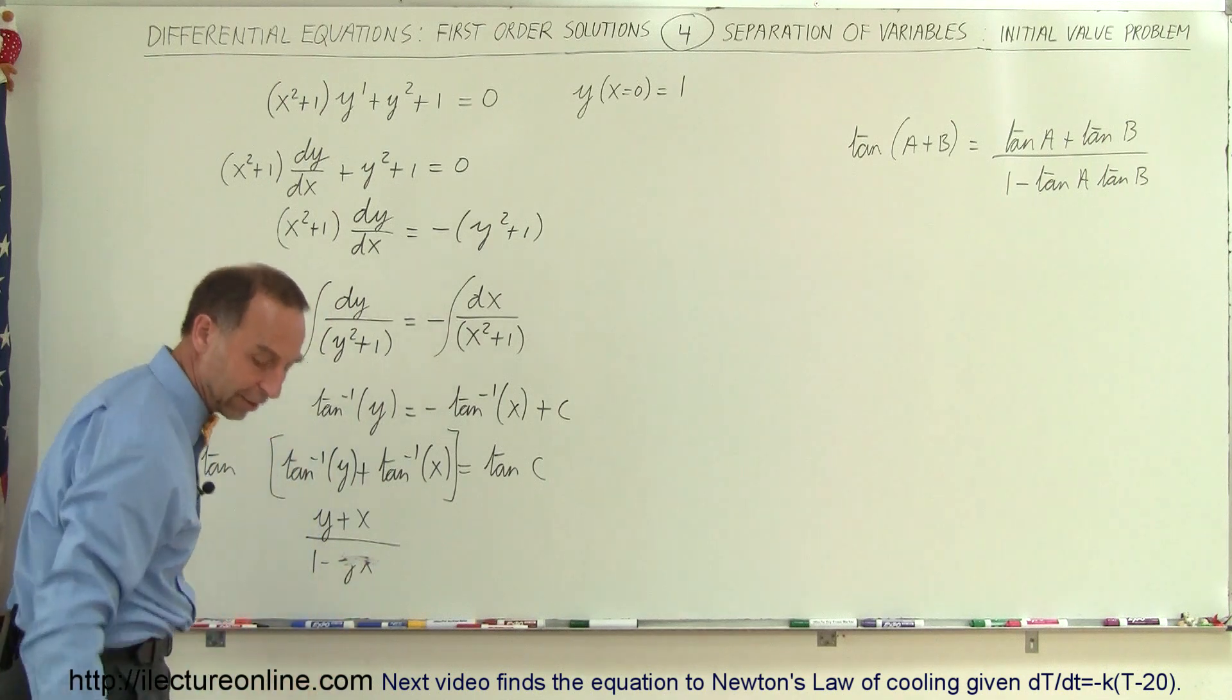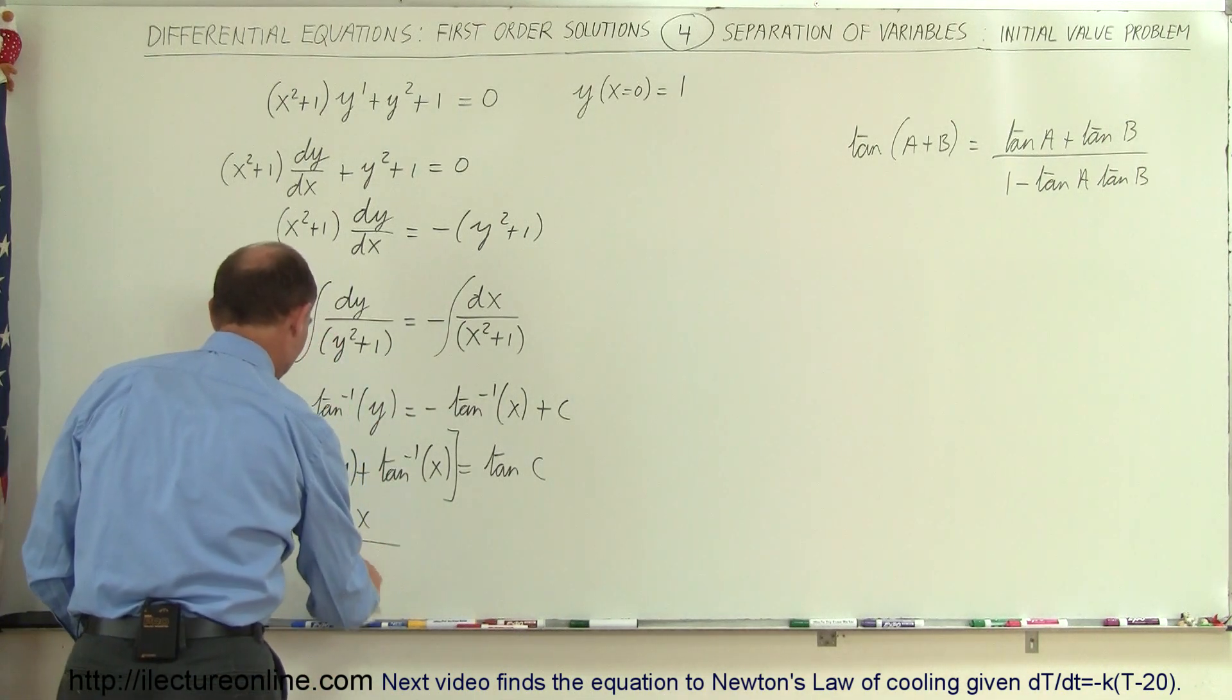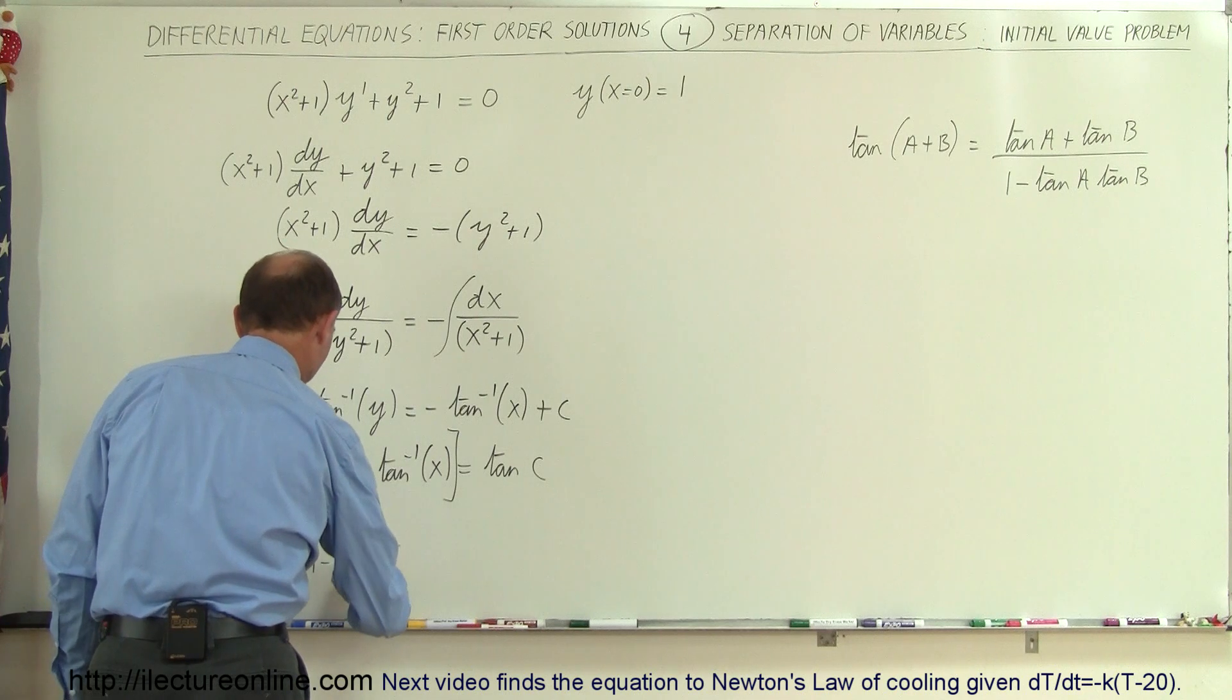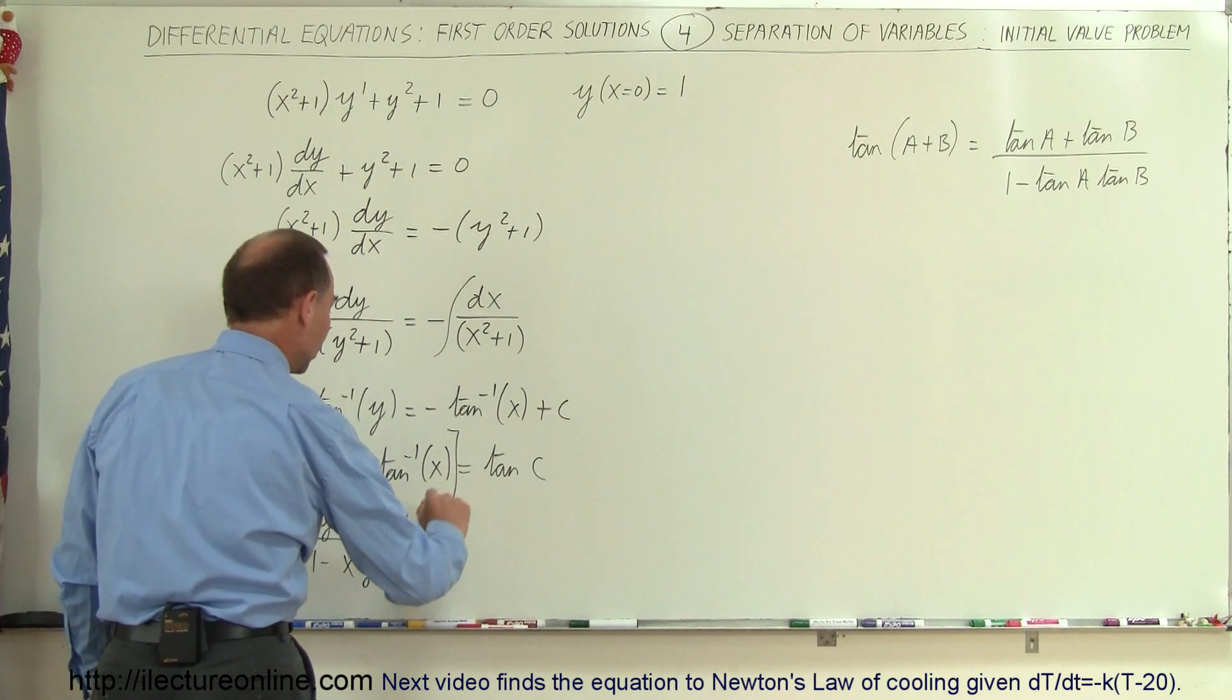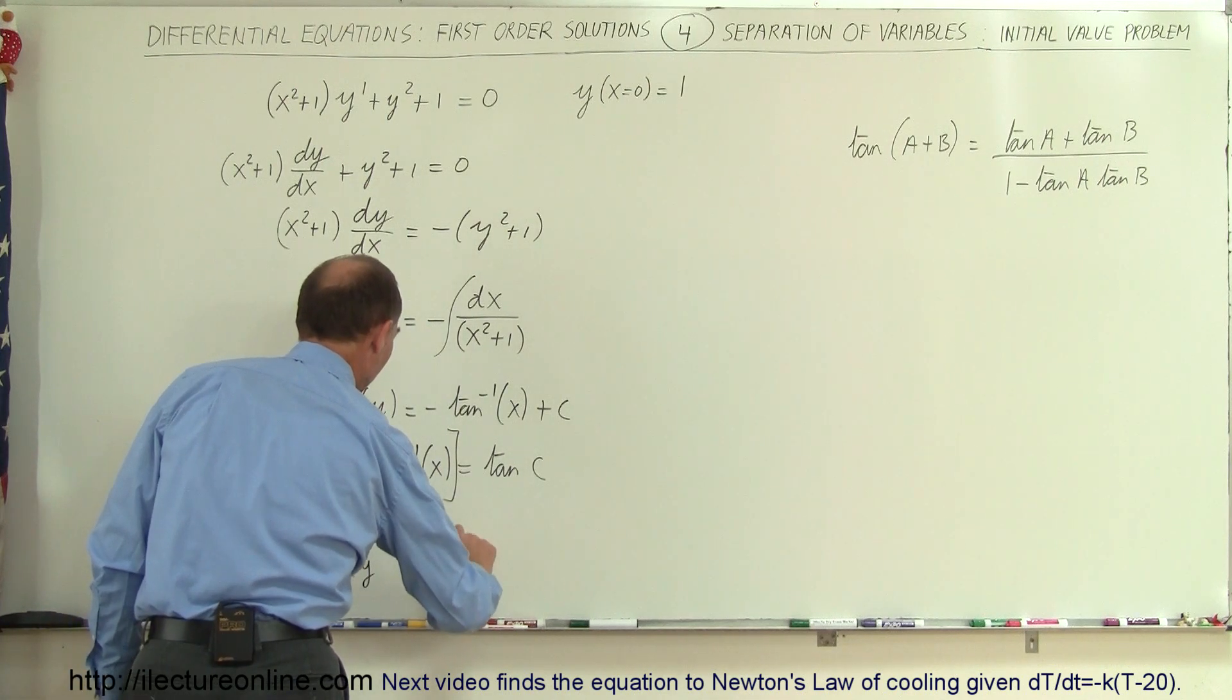on top you get y + x divided by 1 minus y times x or x times y. I guess it's more proper to write this as x times y, so we have xy = tan(c).